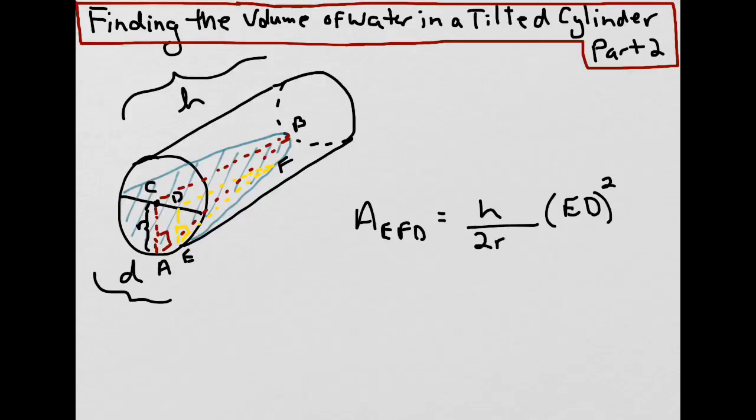In part one we looked at a tilted cylindrical glass which was filled with water that covered half the base and touched the bottom lip of the glass at the top. Our goal was to determine the volume of the water using thin triangular slices and then integrating the area function of the slices along the diameter, from here to here.